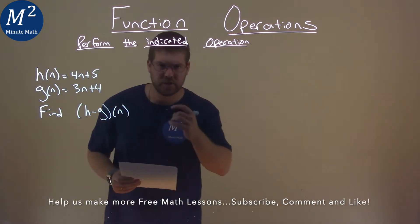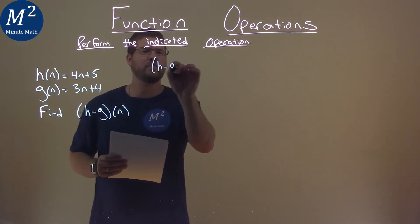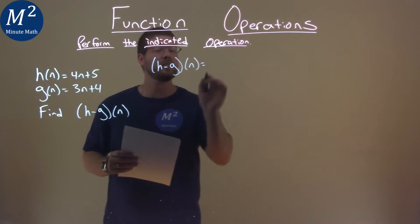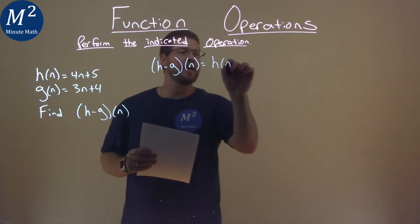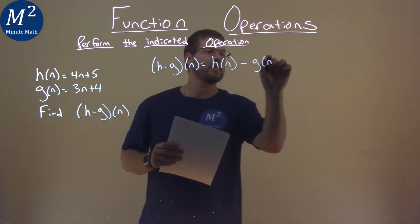But what is h minus g of n? h minus g of n is equal to h of n minus g of n.